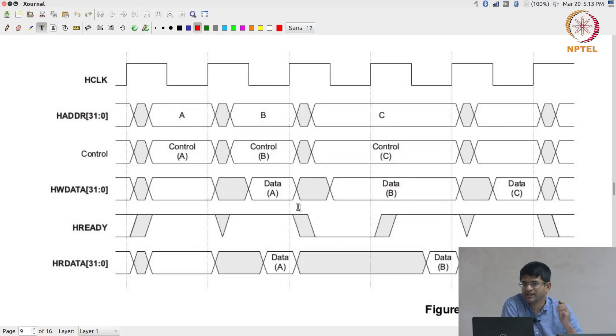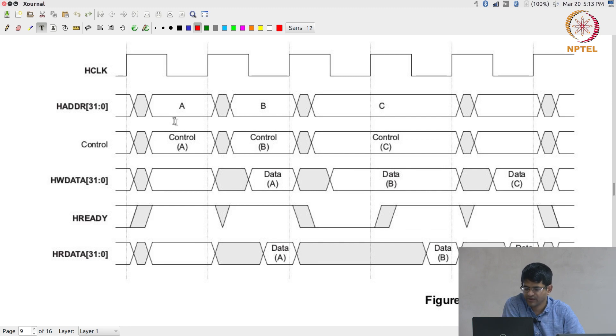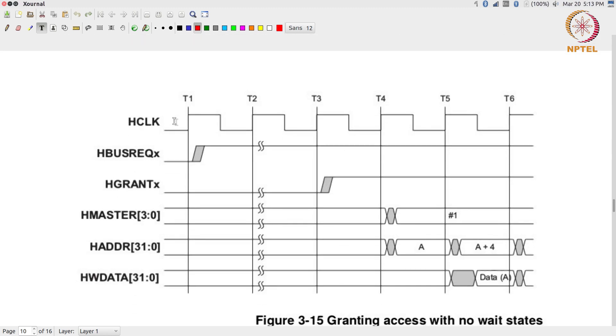Now, this is great provided that there is only one bus master, there is only one device connected to the bus that is capable of changing the values of h_address and control. What happens if that is not the case? That is something we have to think about.